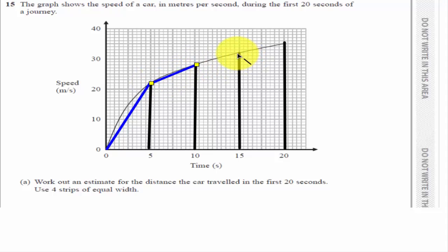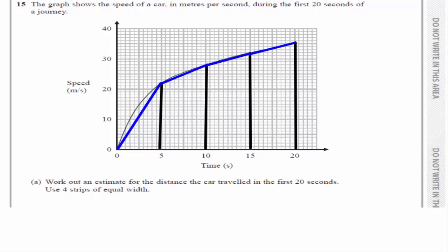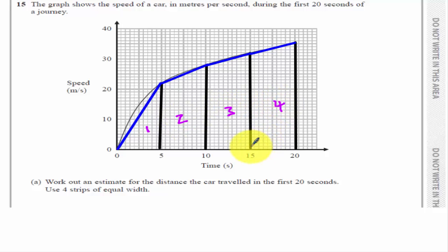And then I've got three trapeziums. You can use a rectangle instead of these trapeziums, but generally you should be using a trapezium. All we've got to do now is work out the area of the four shapes and that will represent the distance travelled.